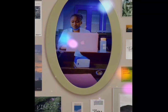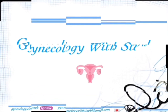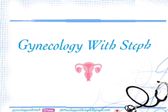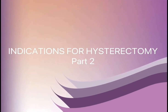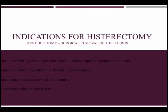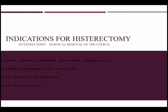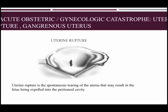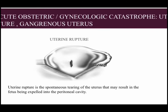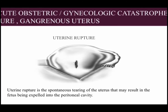From A to D, we are going to look at them one after the other. In this video, I shall be explaining each indication in detail. Uterine rupture is the spontaneous tearing of the uterus that may result in the fetus being expelled into the peritoneal cavity.